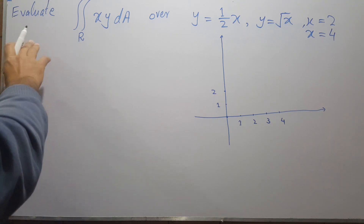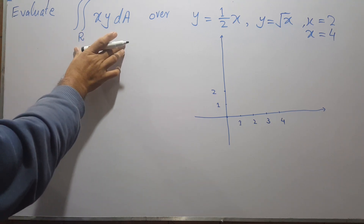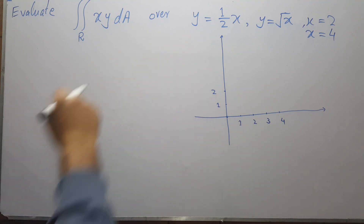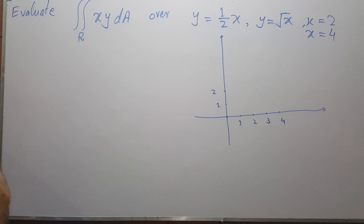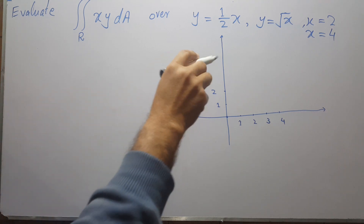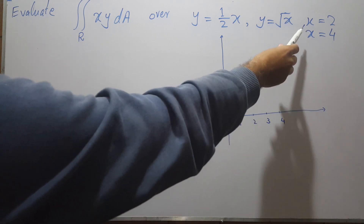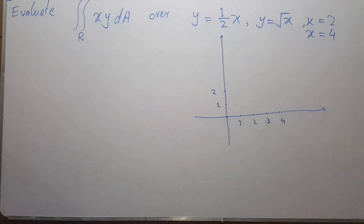In this video we will evaluate a given integral over the region where y equals 1/(2x), y equals √x, x equals 2, and x equals 4. The limits of x are very clear: the lower limit is x equals 2 and the upper limit is x equals 4.